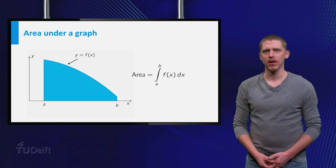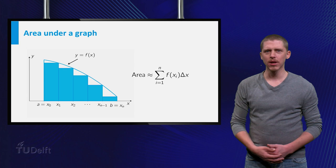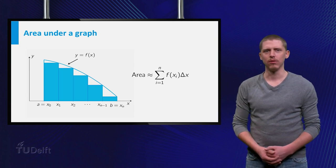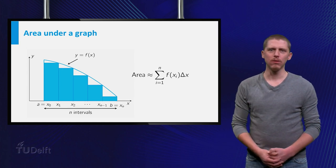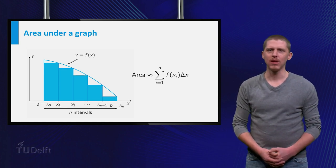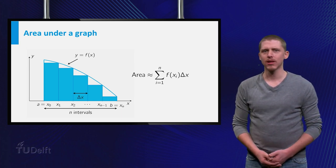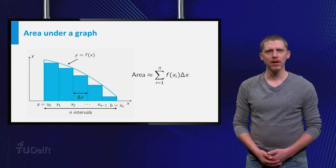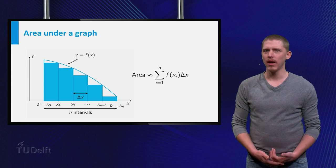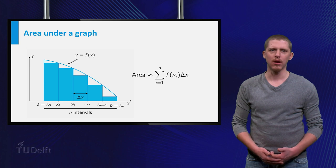This integral is defined as the limit of a Riemann sum shown here. The area can, of course, always be approximated by a Riemann sum, as shown here. We have divided the interval from a to b into n smaller intervals, each with width delta x, and selected the right point xi from the ith interval. Then a rectangle is drawn with height f at xi and above the ith interval. By adding the area of all the rectangles, we obtain an approximation of the area of the region.